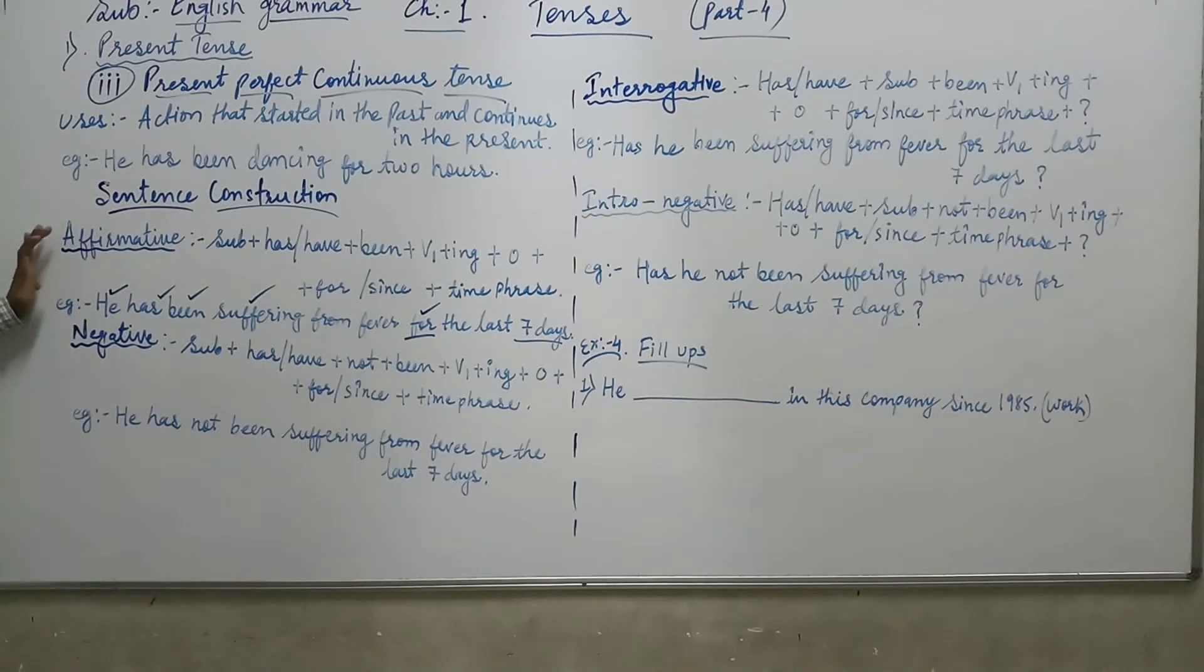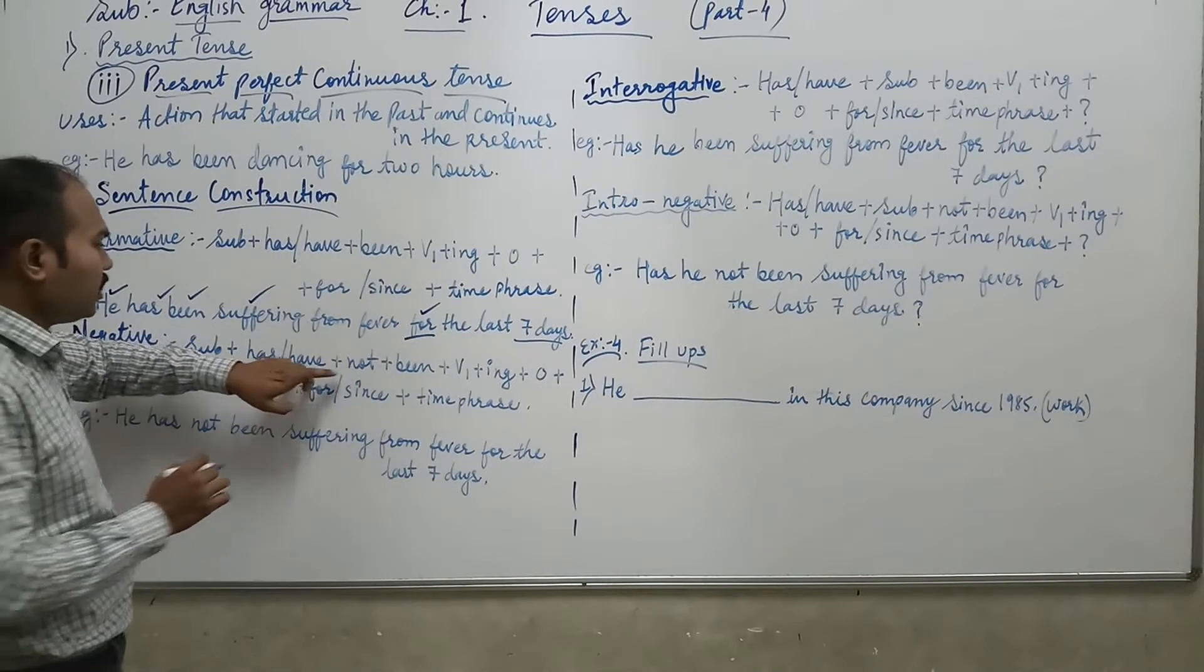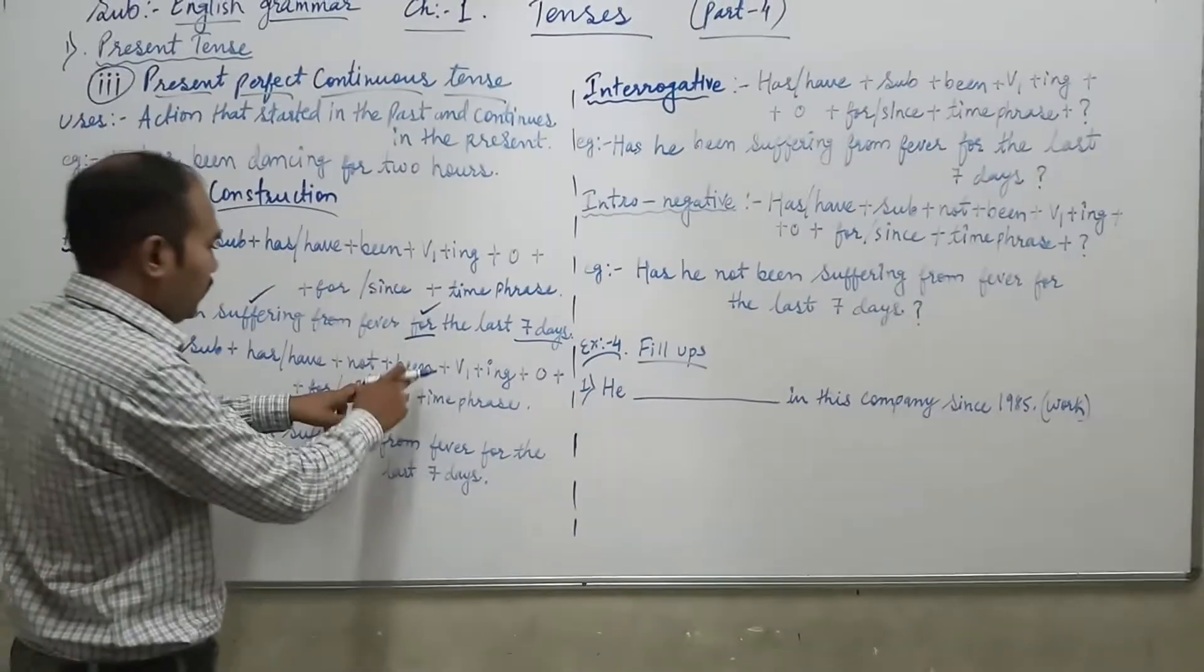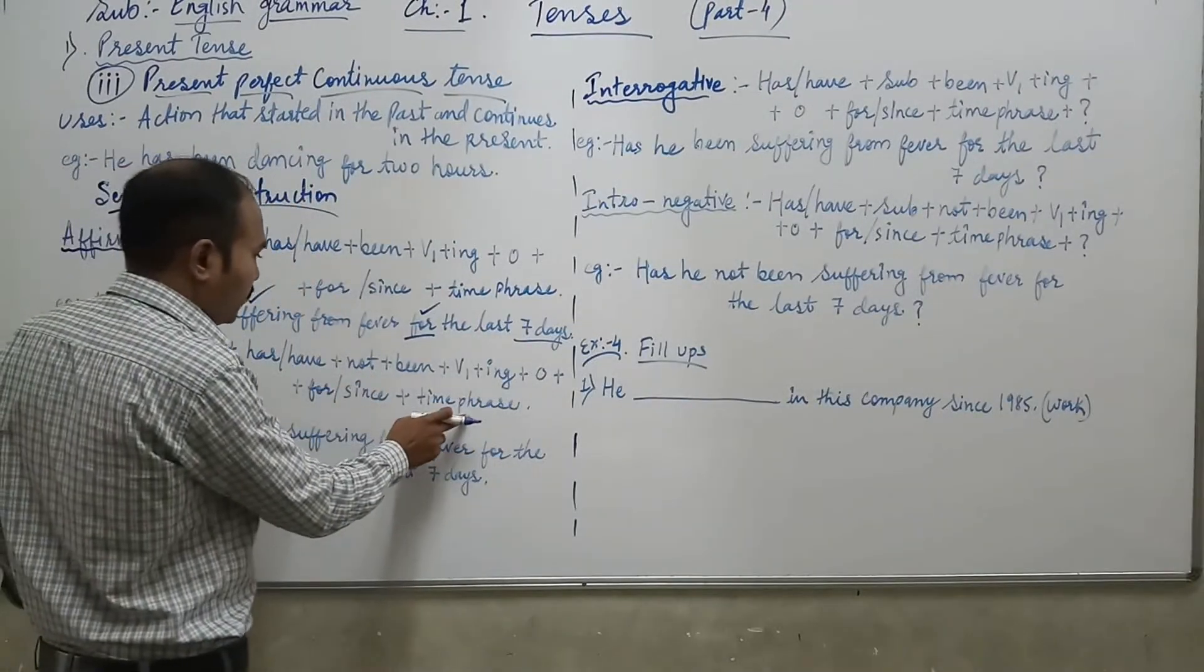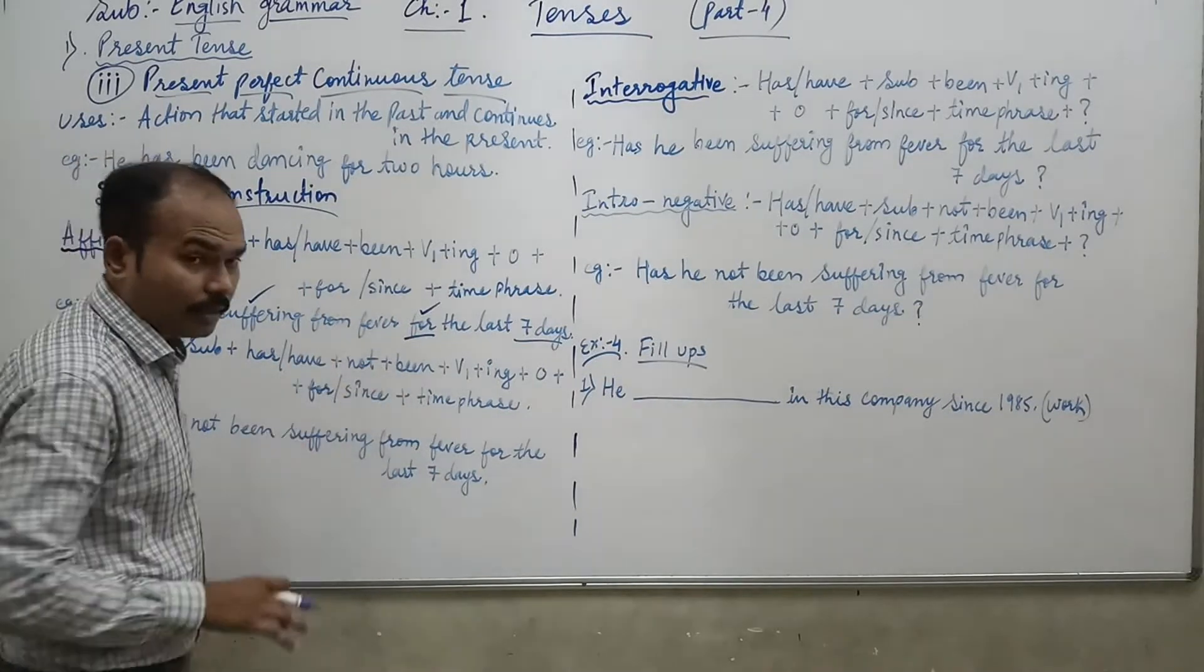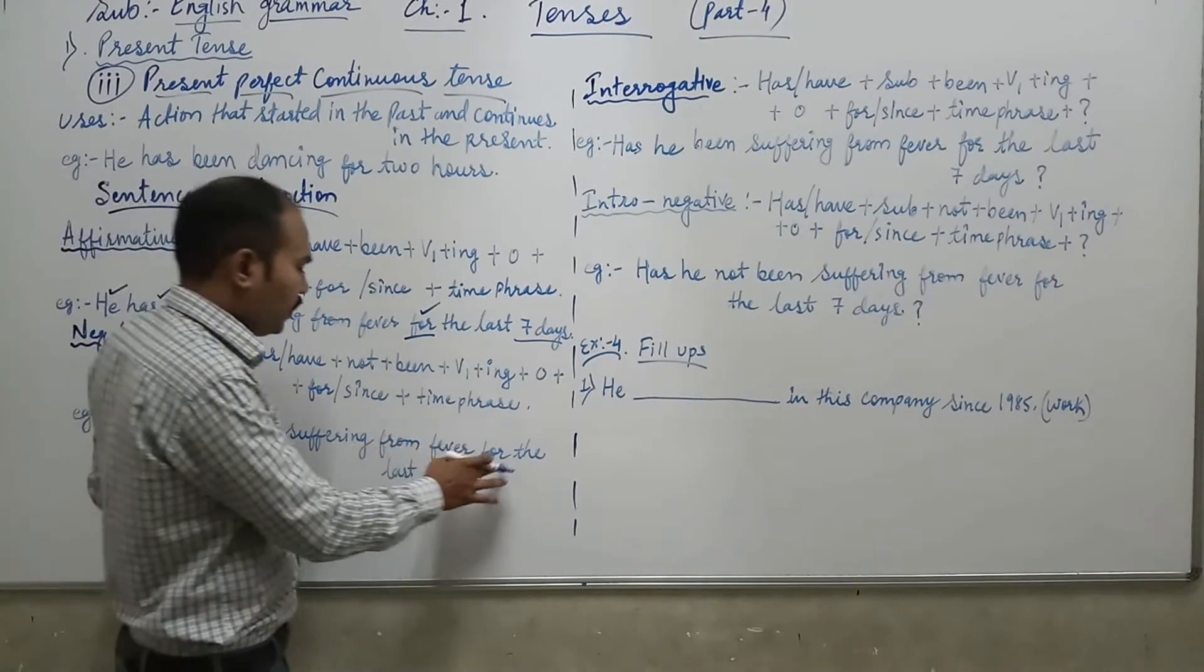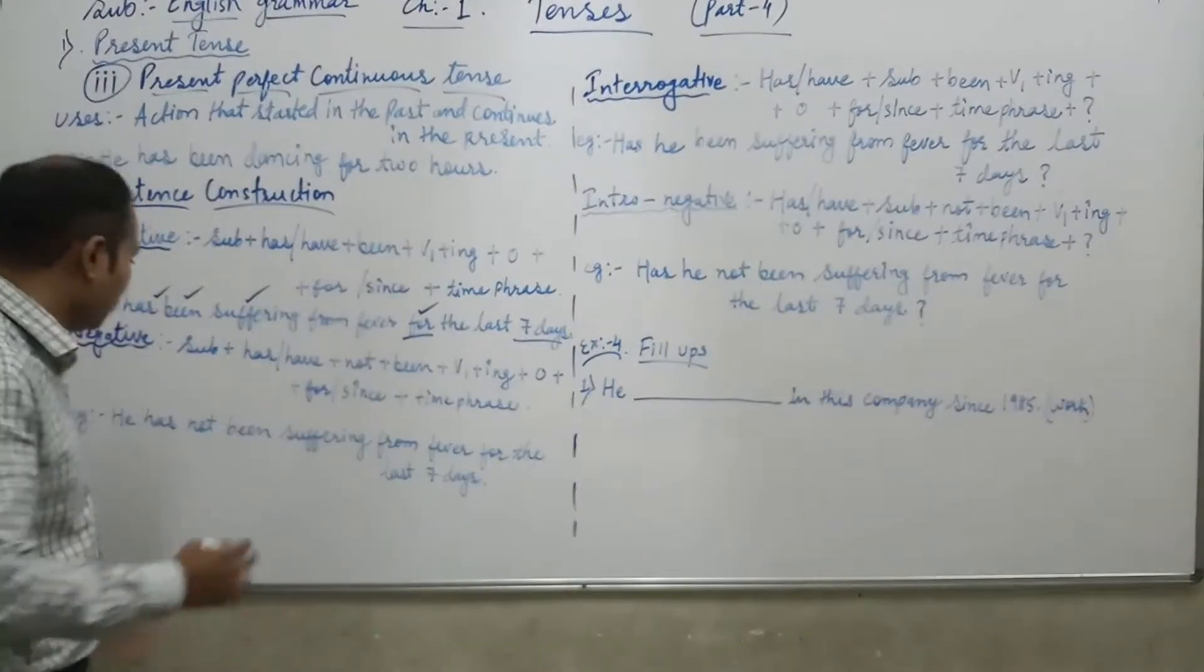Now how to make a negative. Subject is same, has/have same. What's a helping verb ke baad mein aapko yahan not lagana hota hai. Then baaki sab same hai, been, V1 ING, other words, for/since, time phrase. Sirf humme has/have ke baad mein, has/have or been ke beech mein, not lagana hai. So see the example, he has not been suffering from fever for the last seven days. Negative sentence you can see, has or been ke beech mein not lagana hai, between has and been.